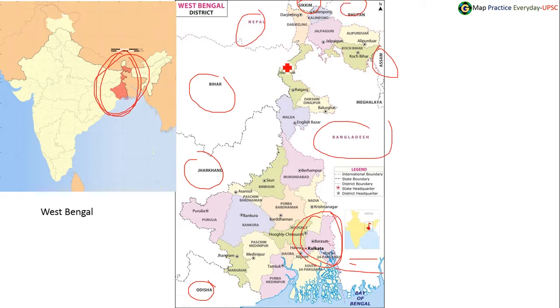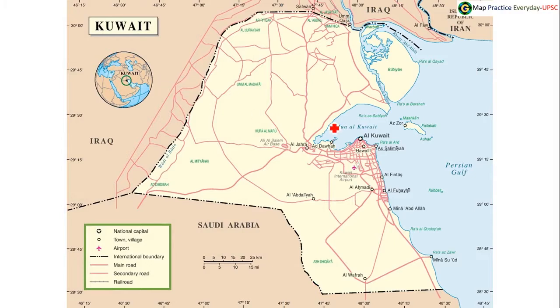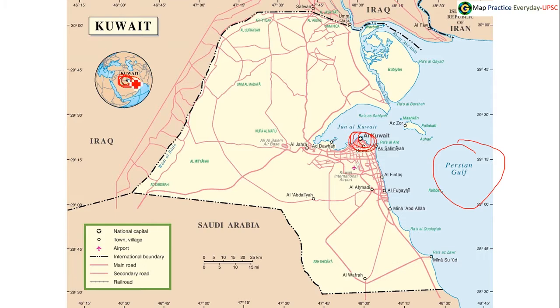Adnan Sami alleges slur at Kuwait airport — a dispute happened at Kuwait airport. Kuwait is a Middle Eastern country located here. Kuwait has a coastal area with the Persian Gulf, and the capital city of Kuwait is Al Kuwait. Kuwait shares its boundary with Saudi Arabia and Iraq.